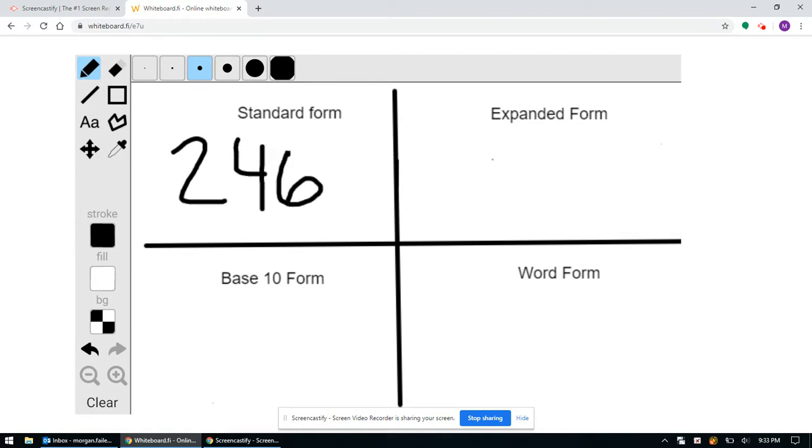Standard form means just to write it the regular way, so you're used to seeing numbers written this way – 246, we have our ones place, our tens place, and our hundreds place. This is standard form.